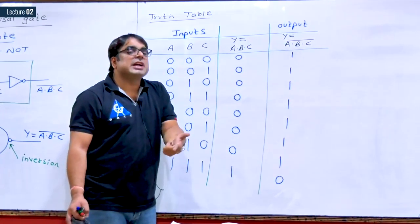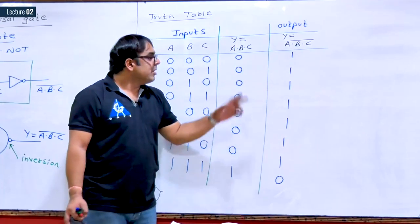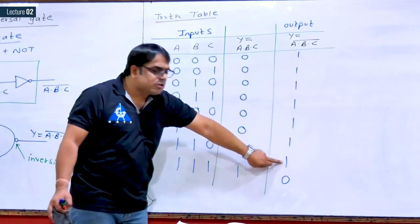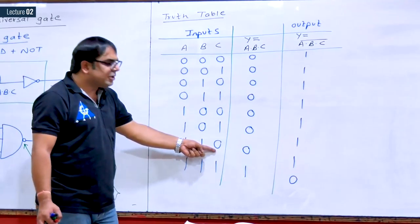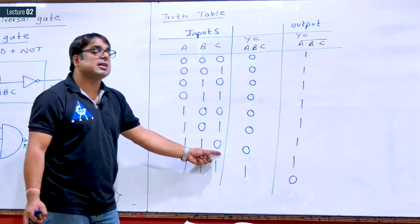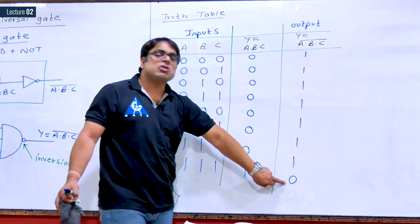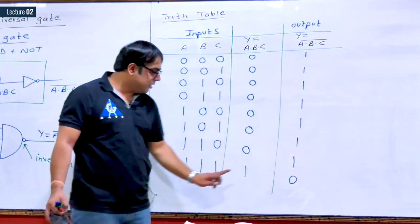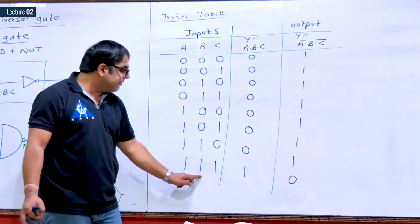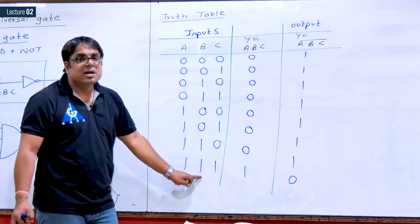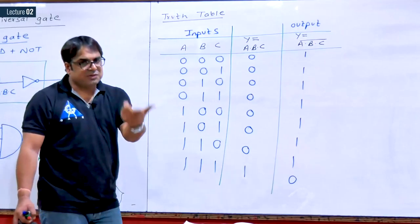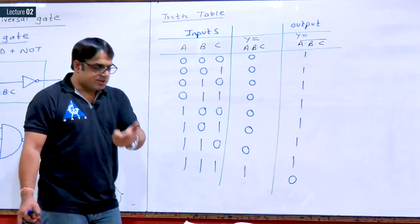Now coming to the statement. What we can notice is that output is logic high when any of the inputs is at logic 0, and output is logic 0 only when all the inputs are at logic 1.